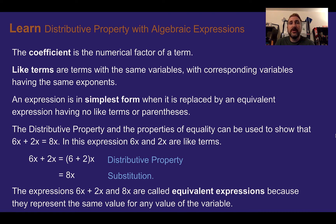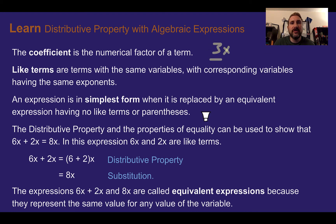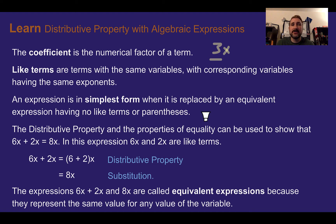Let's learn distributive property with algebraic expressions. First, a couple of vocabulary terms you need to know. The coefficient is the numerical factor of a term — if there's a number in front of a variable, that is the coefficient. So in 3x, 3 is your coefficient. Like terms are terms with the same variables, and they also have to have the same exponent. A regular x is a different term than x to the second power.